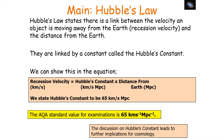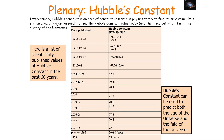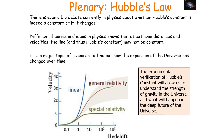The discussion on Hubble's constant has further implications for cosmology. Over the past 60 years there has been great variance in what Hubble's constant actually is, which is important because it can be used to predict both the age and the fate of the universe. Different theories show that at extreme distances and velocities, Hubble's constant might not actually be constant. Finding the expansion rate of the universe experimentally will allow us to understand the strength of gravity and what will happen in the deep future of the universe.